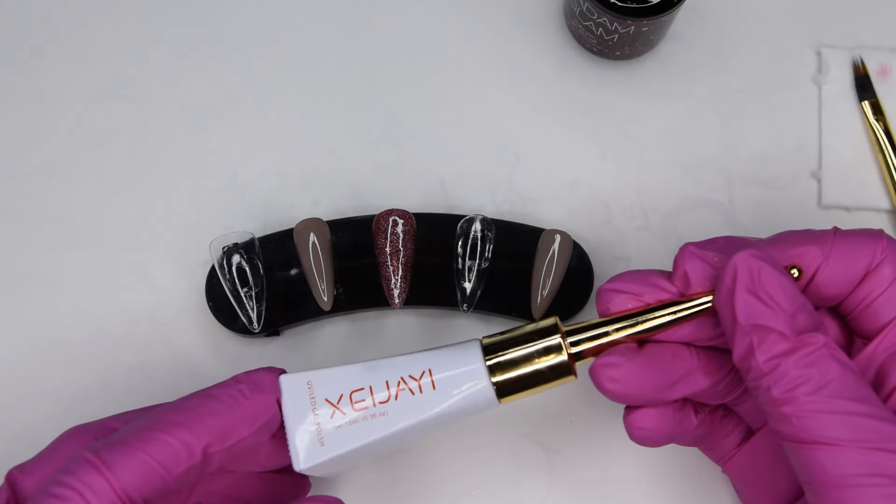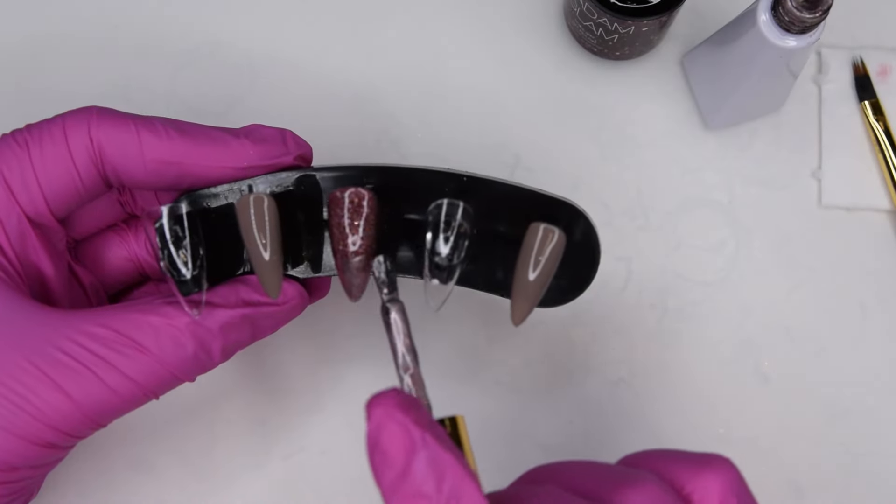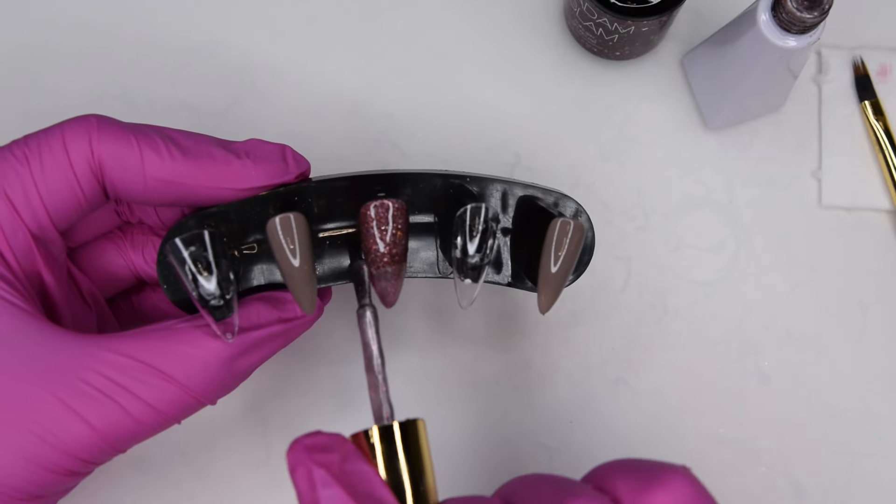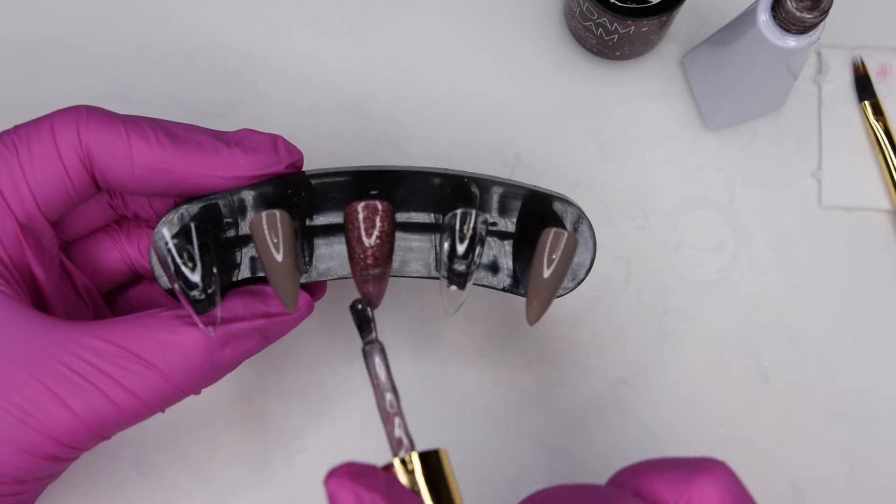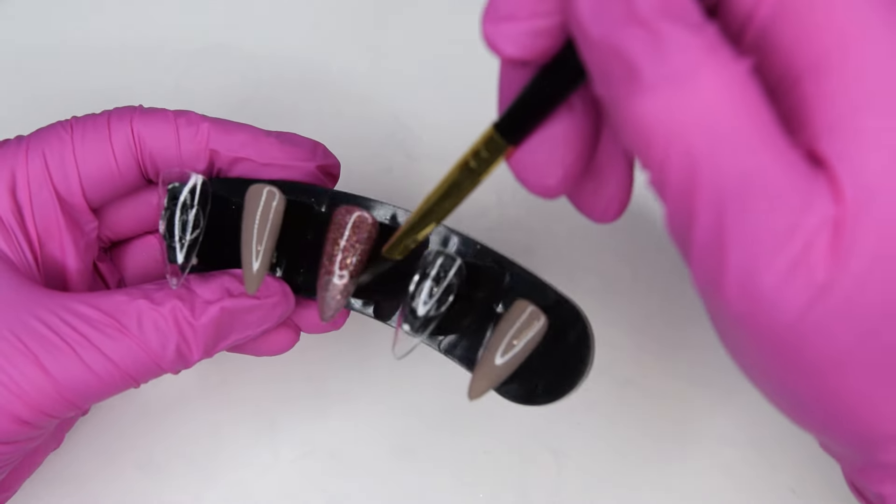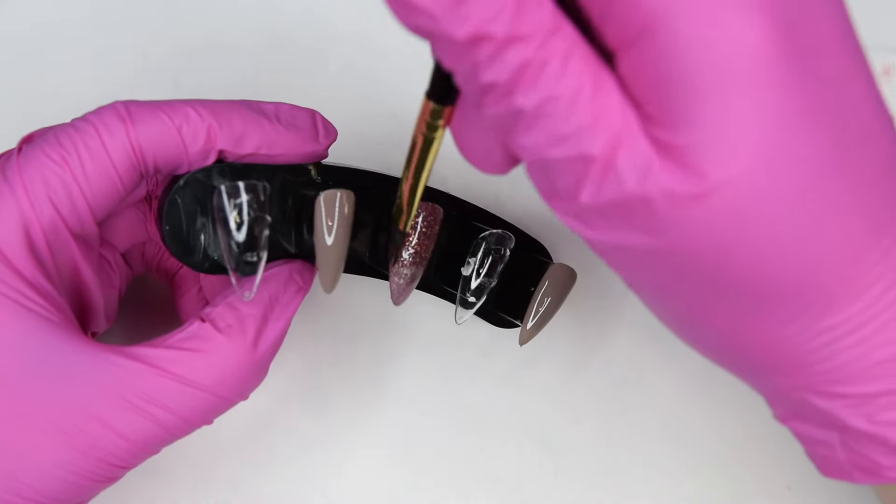And then I go in with this cat eye. I only apply the first layer here. I also fade this upwards into this red color. And cure it.